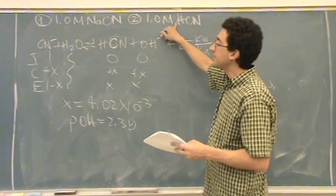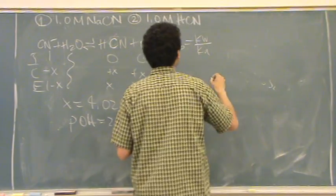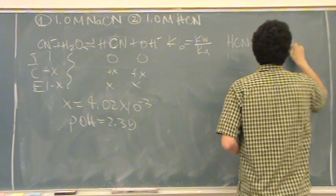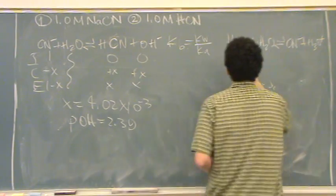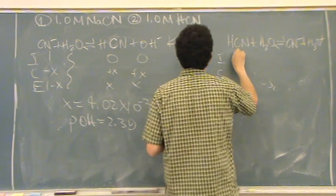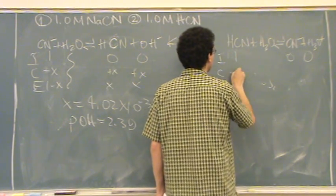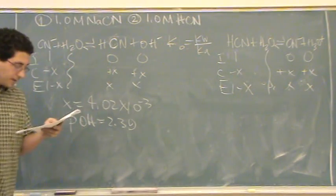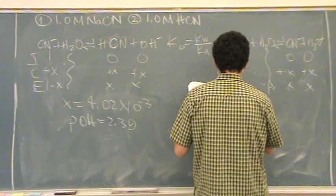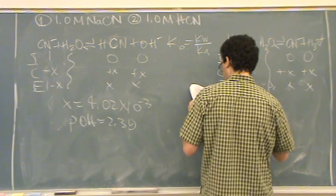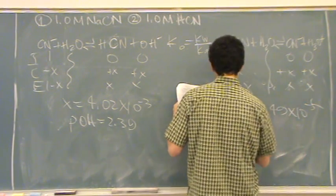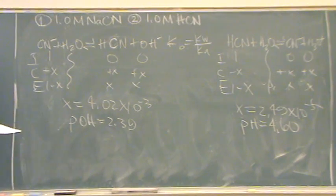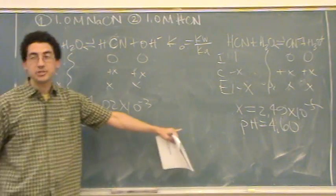Part C: find the pH of beaker two. Same setup — HCN plus H₂O goes to CN⁻ plus H₃O⁺. ICE table, this time use Ka. Initial concentration is 1. Change is minus X, plus X, plus X. Solve through and you get X = 2.49 × 10⁻⁵, so pH = 4.6. Is that okay, less than 7? Yes — pH less than 7 means acid.